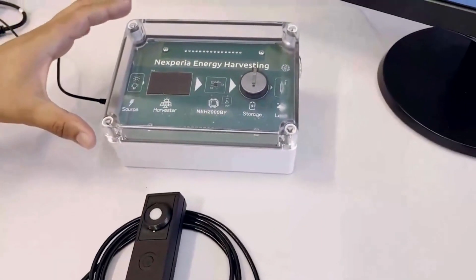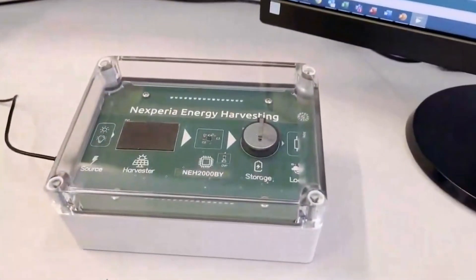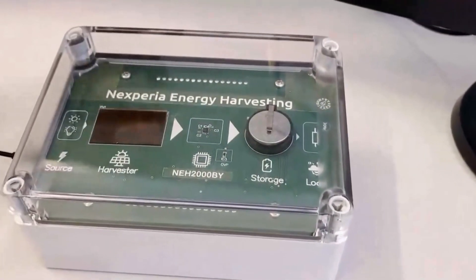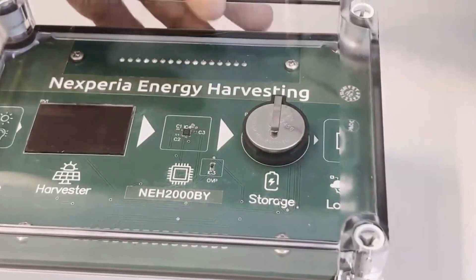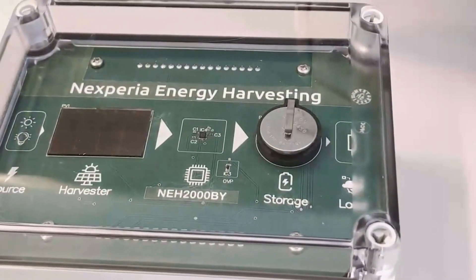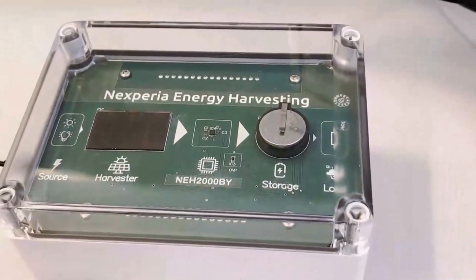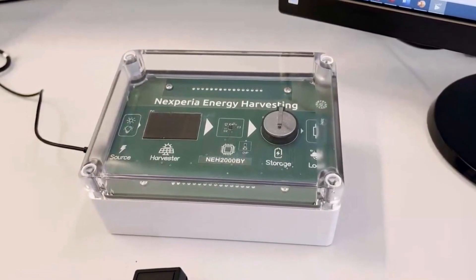In this box we have the PV cell, a small PV cell. In the middle we have the Nexperia energy harvesting solution, that is the NE82000BY, and a small rechargeable coin cell battery.